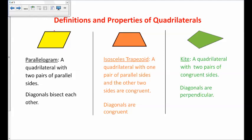First, a parallelogram is a quadrilateral with two pairs of parallel sides. An important property about the diagonals is that the diagonals bisect each other. Bisect means to cut in half — bi means two — so each diagonal cuts the other diagonal in half. We could prove this using side-side-side or side-angle-side triangle congruence, but for the sake of time, trust that the diagonals do bisect each other in a parallelogram.